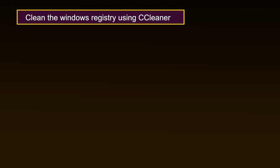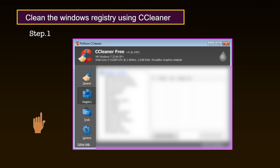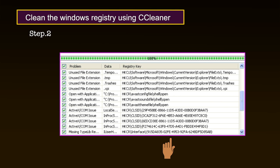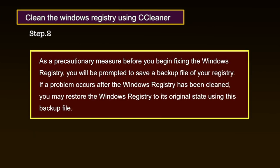Steps to clean the Windows Registry using CCleaner: Step 1: Click on the Registry tab to activate the following screen. The CCleaner Registry window is divided into a Registry Cleaner list and a pane to display information about any problems identified. Step 2: Check all the items in the Registry Cleaner list and then click 'Scan for Issues' to begin scanning for registry-related problems. As a precautionary measure, before you begin fixing the Windows Registry, you will be prompted to save a backup file. If a problem occurs after the registry has been cleaned, you may restore it to its original state using this backup file.